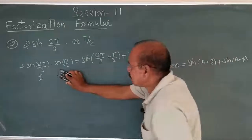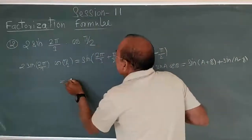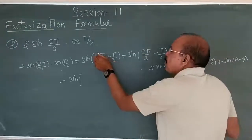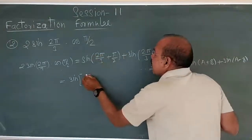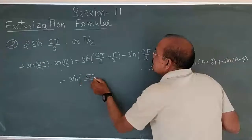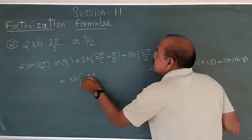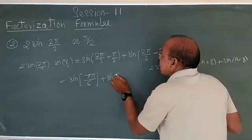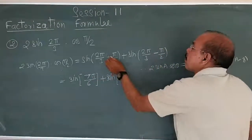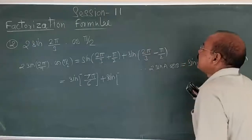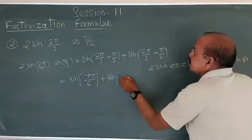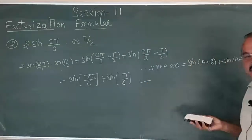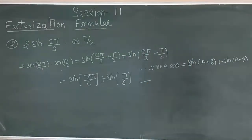That equals sin of — cross multiplying: 4 plus 3 gives 7π upon 6, plus sin of — 4 minus 3 gives π upon 6. And hence your answer is complete.